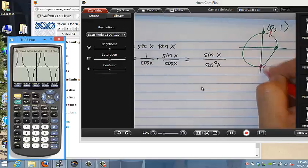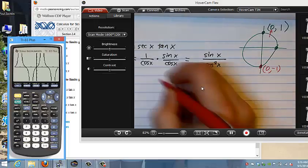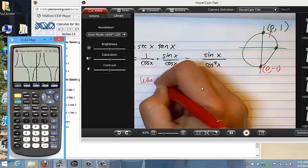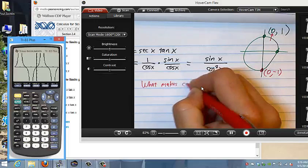So you have to think about what angle measurements would make the cosine of x, I mean, that's the real question. What makes cosine x equals 0?